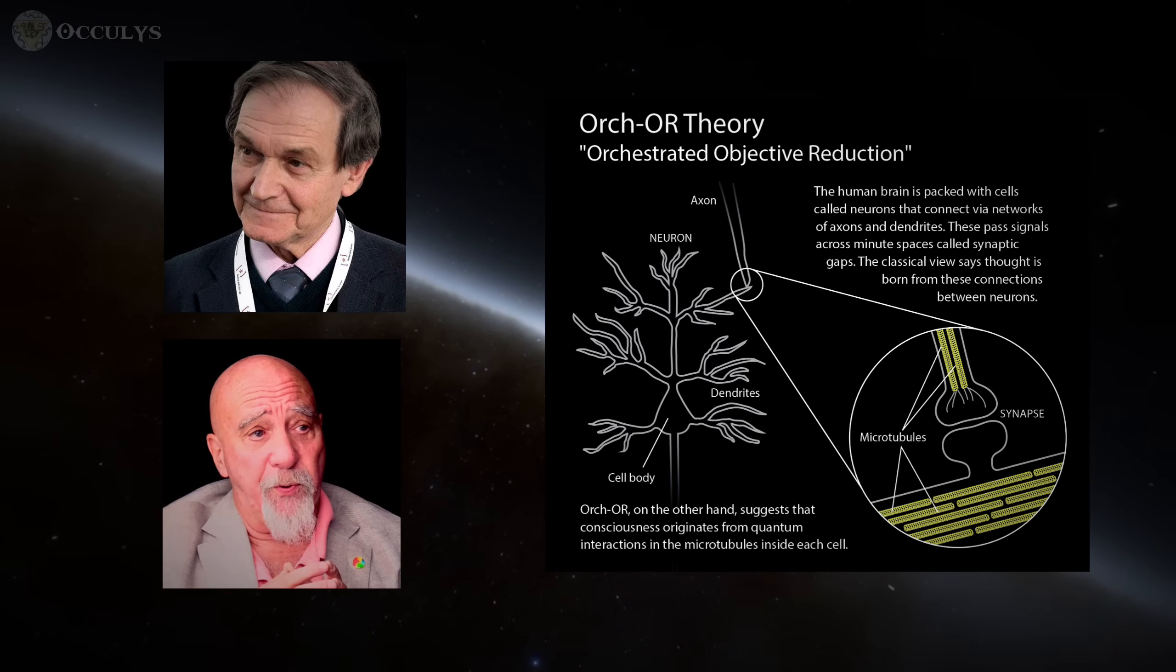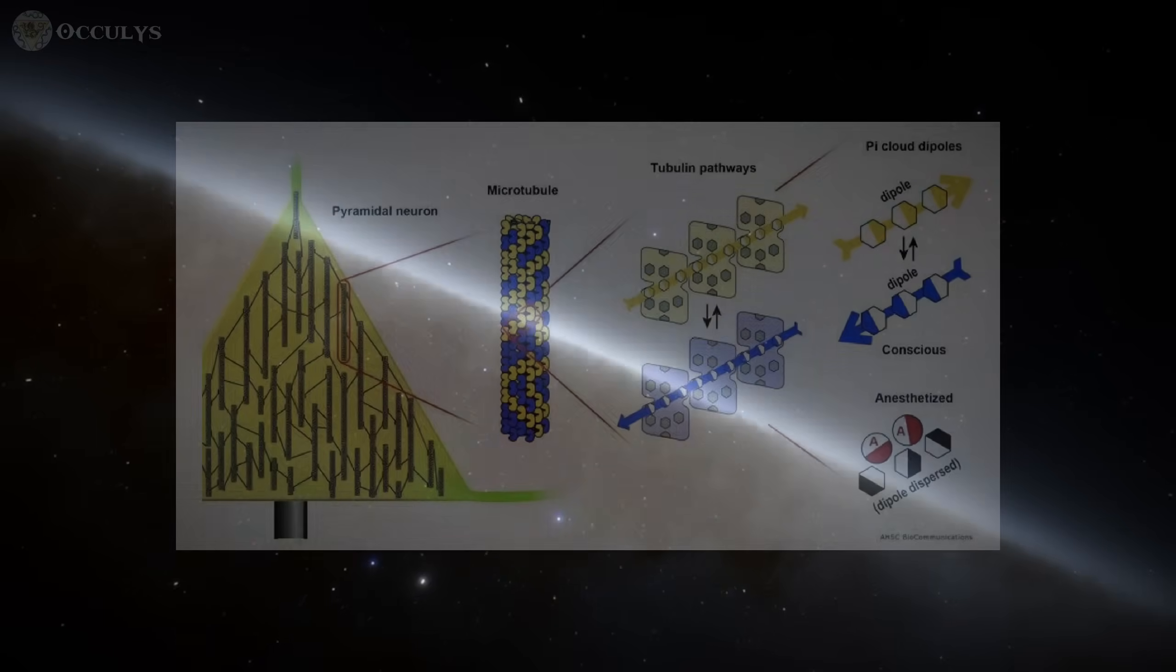One of the most prominent is the Orch-Or theory from the Nobel laureate Sir Roger Penrose and Dr. Stuart Hameroff. Their work suggests that consciousness arises from quantum processes occurring inside microtubules, which are tiny structures within our brain's neurons.